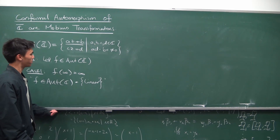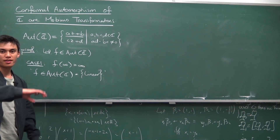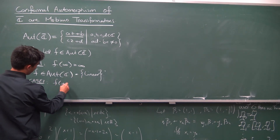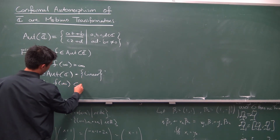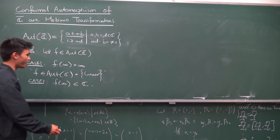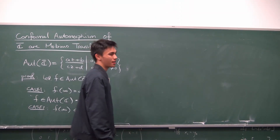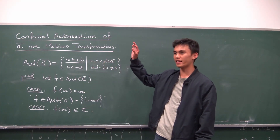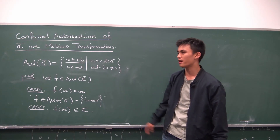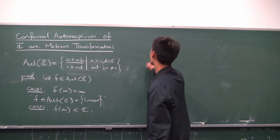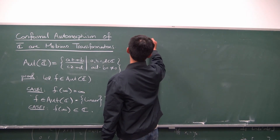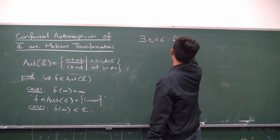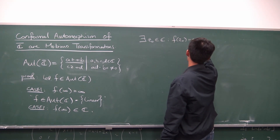Case two is when infinity doesn't stay at infinity — it gets mapped somewhere else. So f(∞) is now just a point in the complex plane, not infinity. Because the function is bijective, there needs to be a point from C that gets mapped to infinity to fill its spot. In particular, there exists some z₀ in the complex plane such that f(z₀) equals the point at infinity.